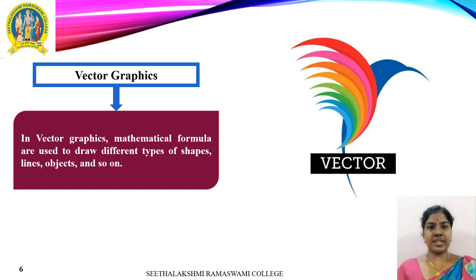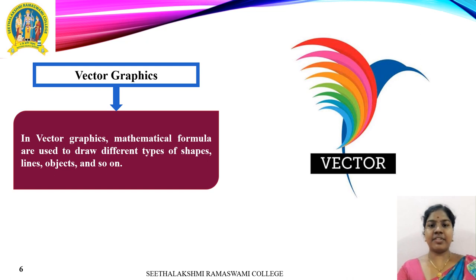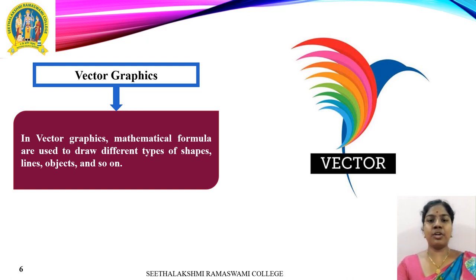Vector graphics are computer images created using a sequence of commands and mathematical statements that place lines and shapes in two-dimensional or three-dimensional space. A graphics artist's file is created and saved as a sequence of vector statements. A vector graphics file describes a series of points to be connected. Vector graphics are digital art rendered by the computer using mathematical formulas, while raster images are made of pixels, making them resolution-dependent and best used for creating photos.